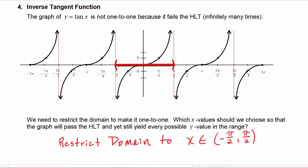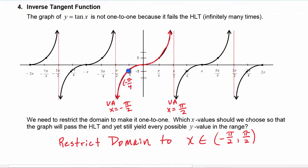So we will be using this section of the graph. Let's take a look at the key values: we have a vertical asymptote at x equals negative pi over two, and a vertical asymptote at x equals positive pi over two. Then we have a couple of easy values — at negative pi over four the y value is negative one, here we have the point (0, 0), and finally here we have (pi over four, one).